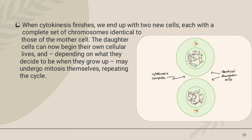The daughter cells can now begin their own cellular life, and depending on what they decide to be when they grow up, they will undergo mitosis themselves, repeating the cycle. When they divide, they will go through the mitosis stages again, and this cycle will be repeated.